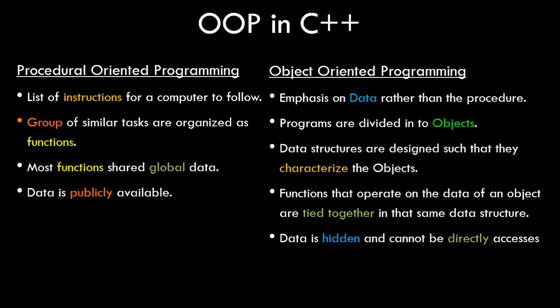Let's list down certain important aspects of procedural oriented programming as well as object oriented programming. In procedural oriented programming we generally have a list of instructions for a computer to follow. We have a group of similar tasks organized in terms of functions, and they all operate on certain global data. Whatever variables we declare in the main function are accessible throughout the program, so data is publicly available and the sense of security is low.